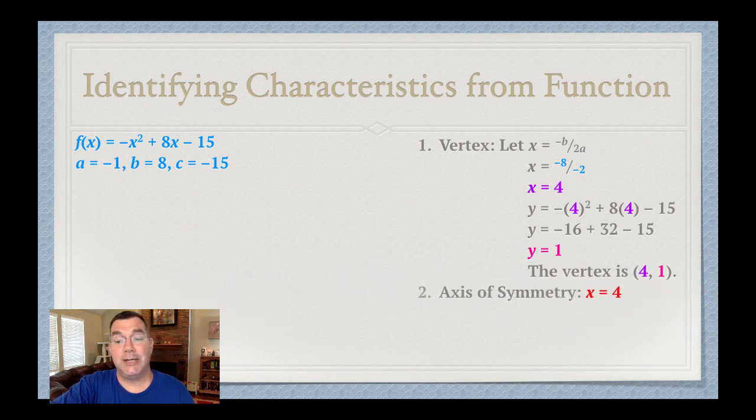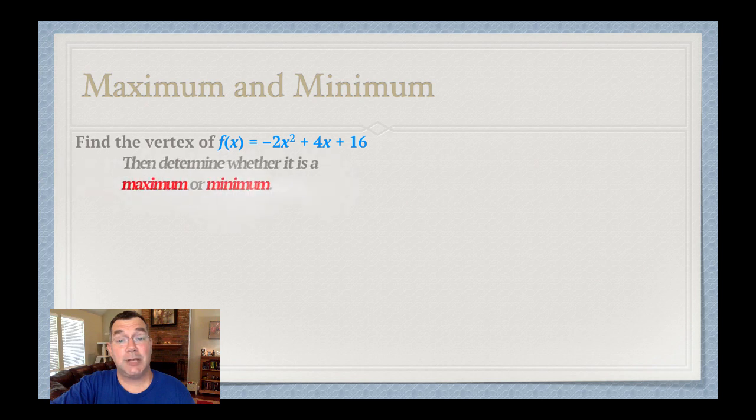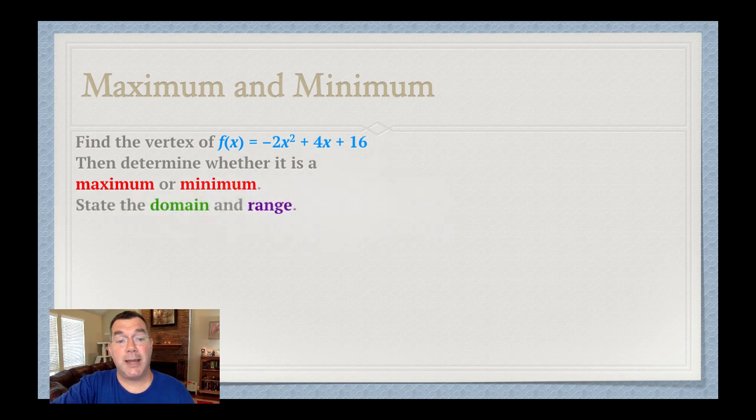That means that the axis of symmetry is at x equals 4. And the y-intercept is just that c value at the end of the function. So that's negative 15. All right, now let's talk about maximum and minimum. Sometimes your vertex is at a maximum, sometimes it's at a minimum. So let's figure out when that happens. So I'm going to find the vertex and then determine whether it's a maximum or a minimum. And then I'm going to state the domain and range for that function.